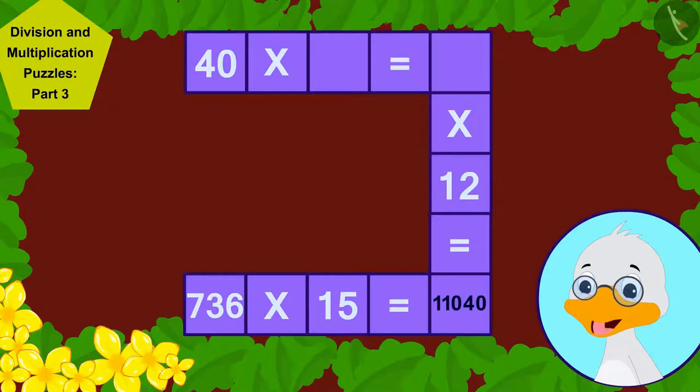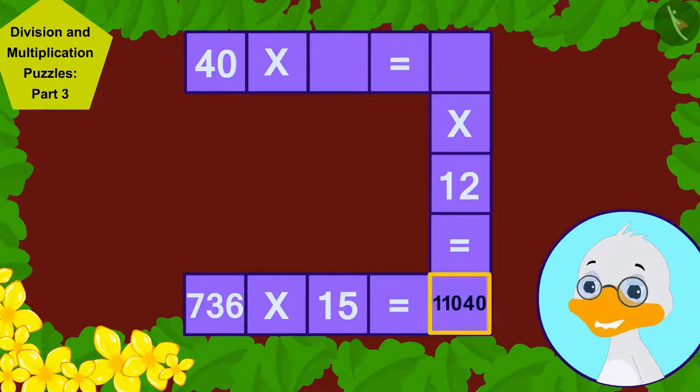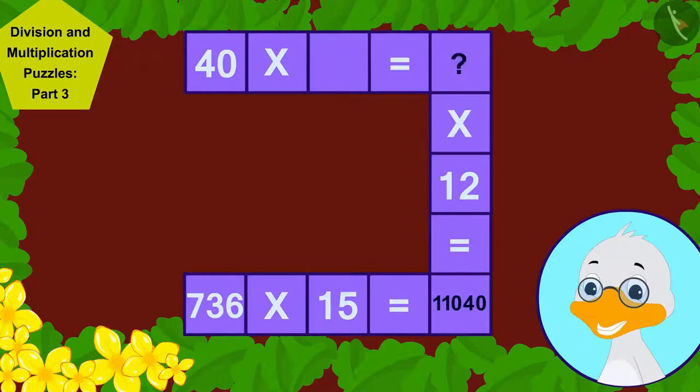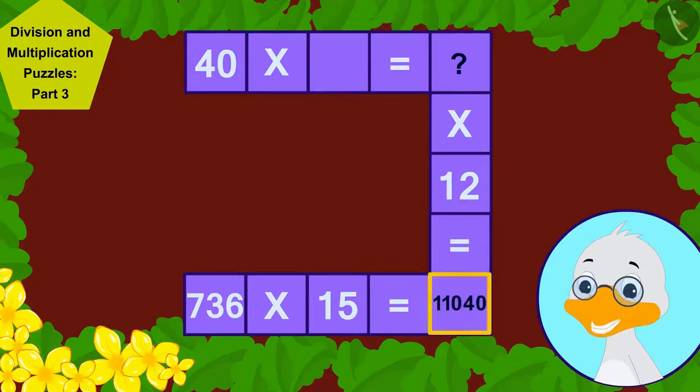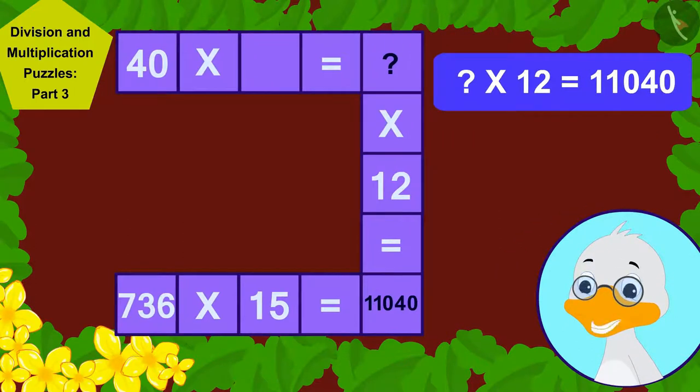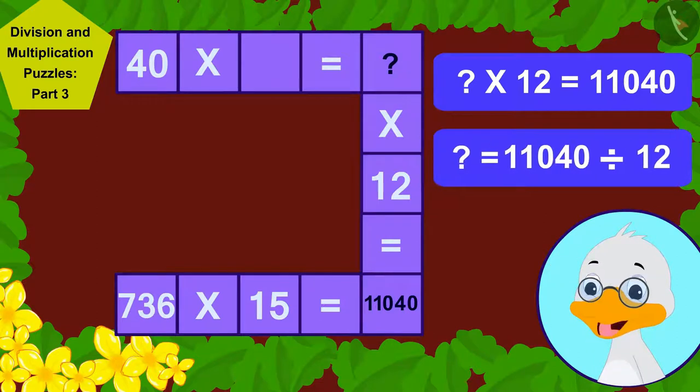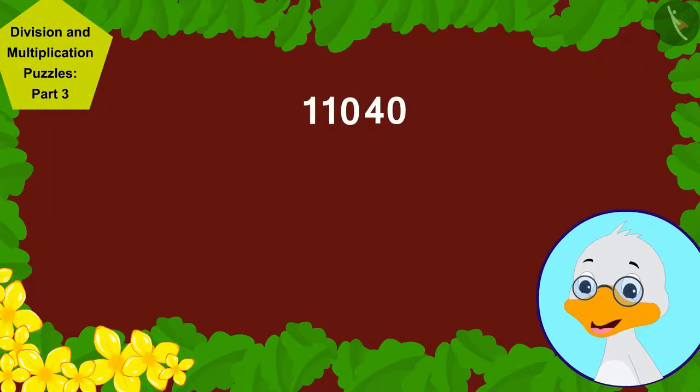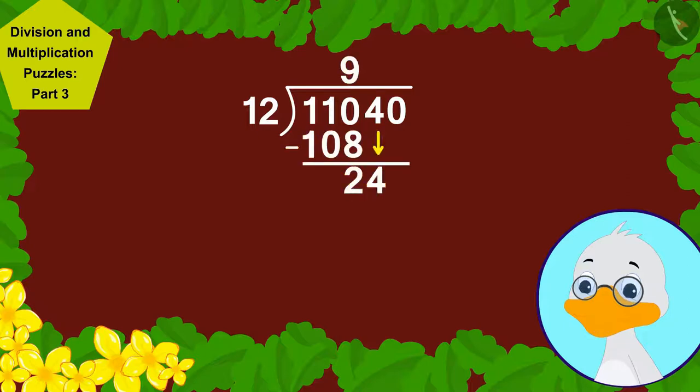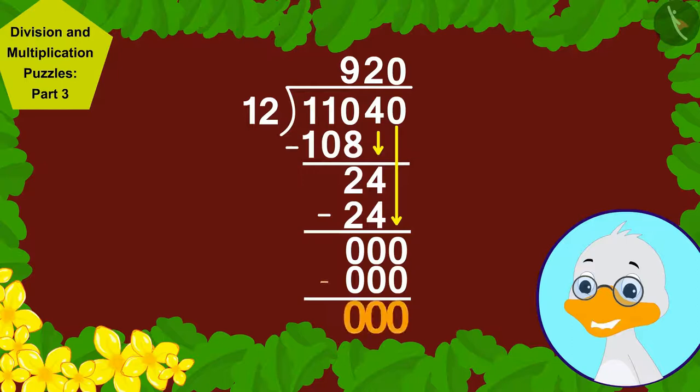Then I noticed that as soon as this blank is filled, I have to find the next number which when multiplied by 12 gives the answer 11,040. And as we know we can write any multiplication as a division, so I divided 11,040 by 12 to fill this blank and then wrote the answer of the division, 920, in this blank.